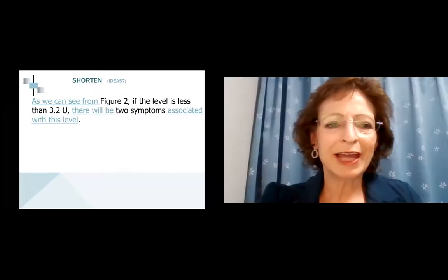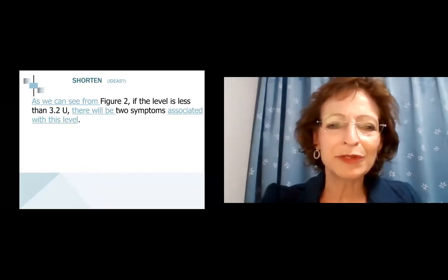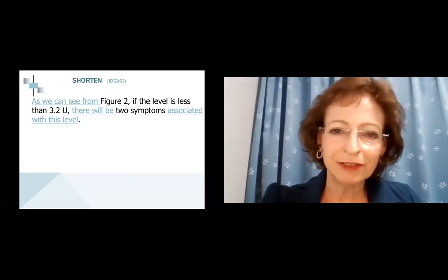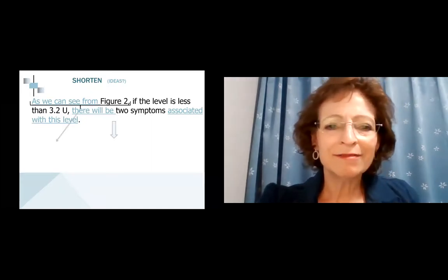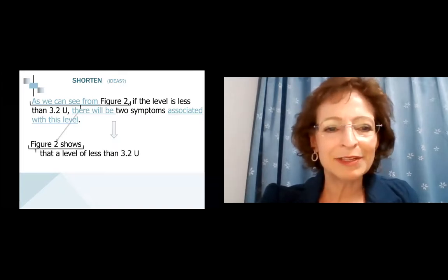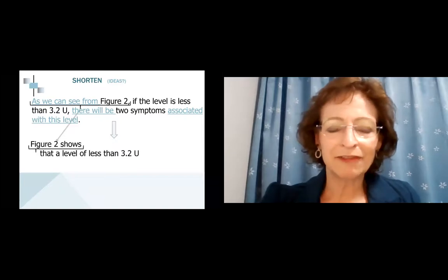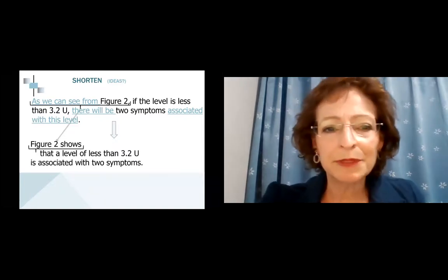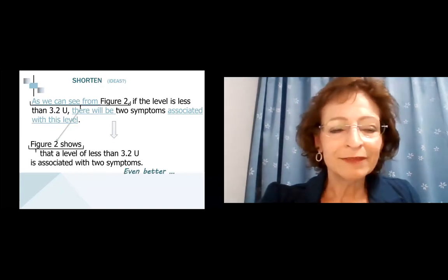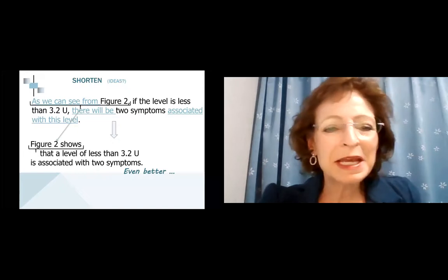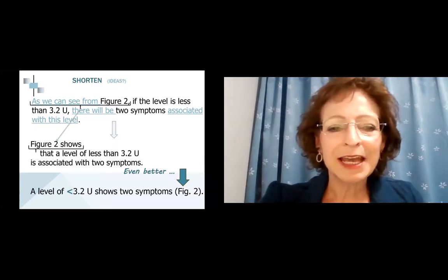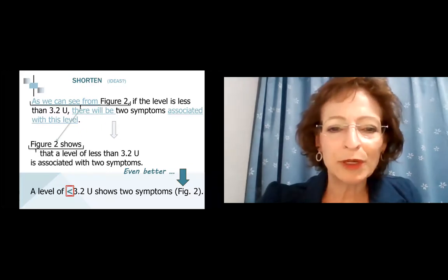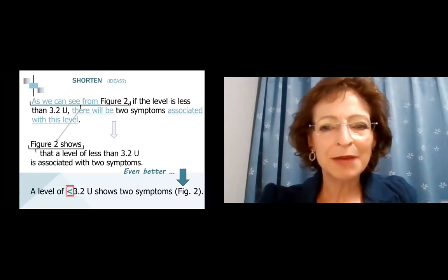Another interesting means of shortening is taking out extra words that might be unnecessary. 'As we can see from figure two, if the level is less than 3.2 units, there will be two symptoms associated with this level.' We've got 'level' and 'level' and 'as we can see from'—can we shorten? 'Figure two shows that a level of less than 3.2 units is associated with two symptoms.' Even better, it's kind of boring to start out a sentence, especially more than one, with 'figure two'—you always have to spell out 'figure' at the beginning of a sentence. But even better might be to include the figure two citation within parentheses at the end of the sentence, and also use a less-than mark for less than 3.2 units. If you compare the top sentence and bottom sentence, you can see how much easier it is to understand the shorter sentence.